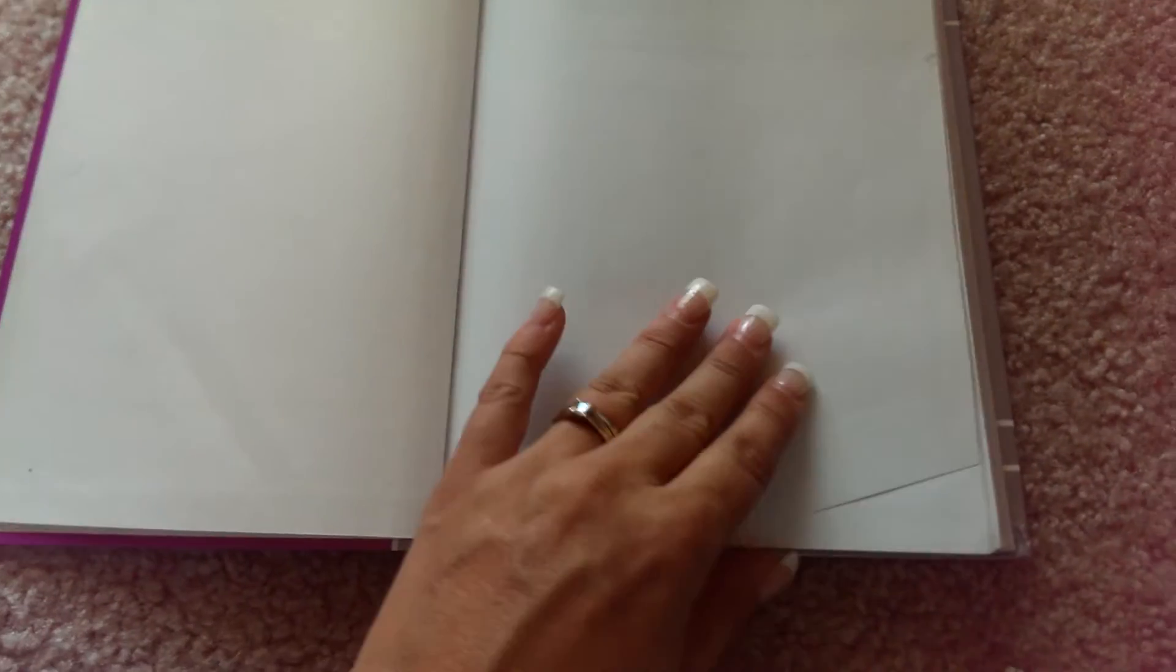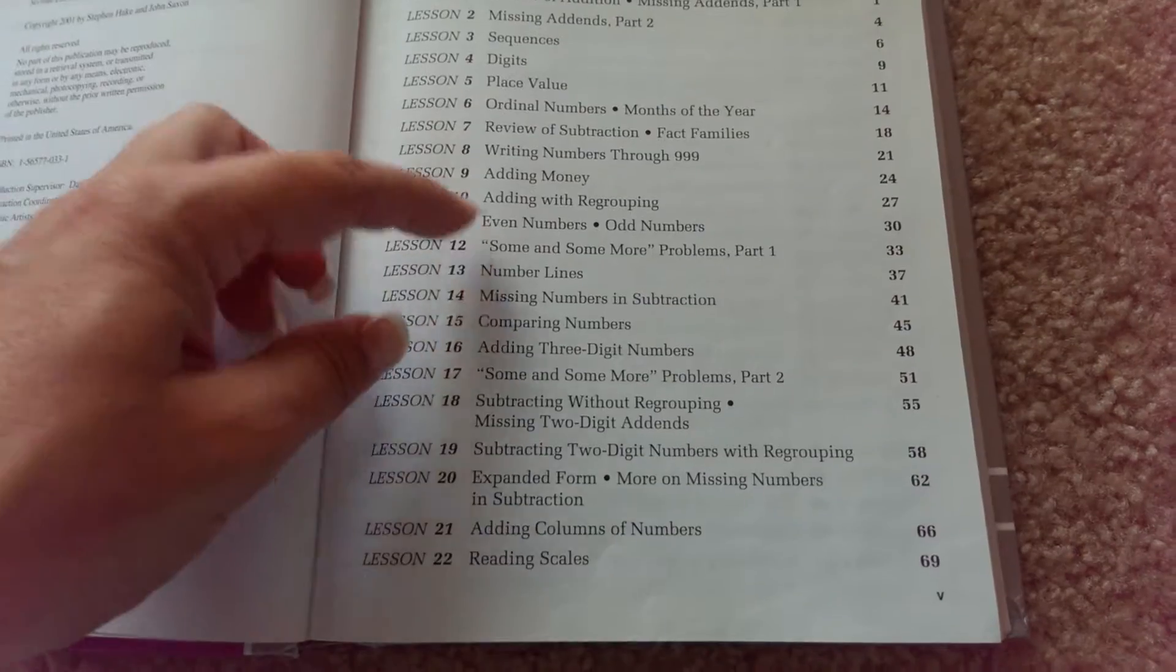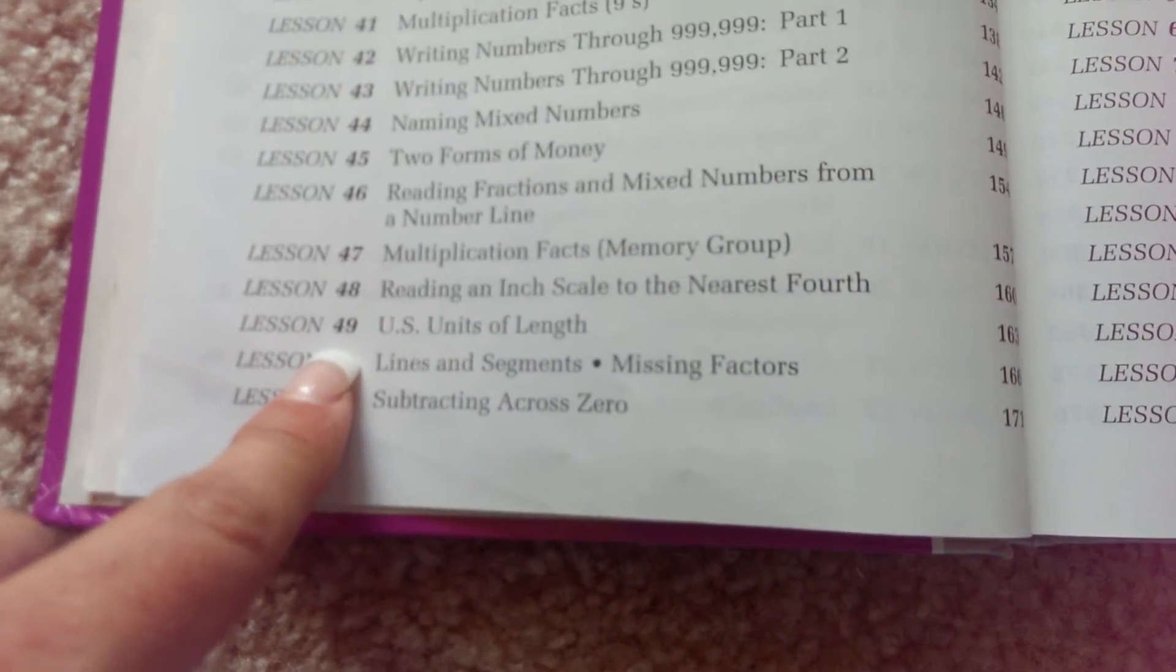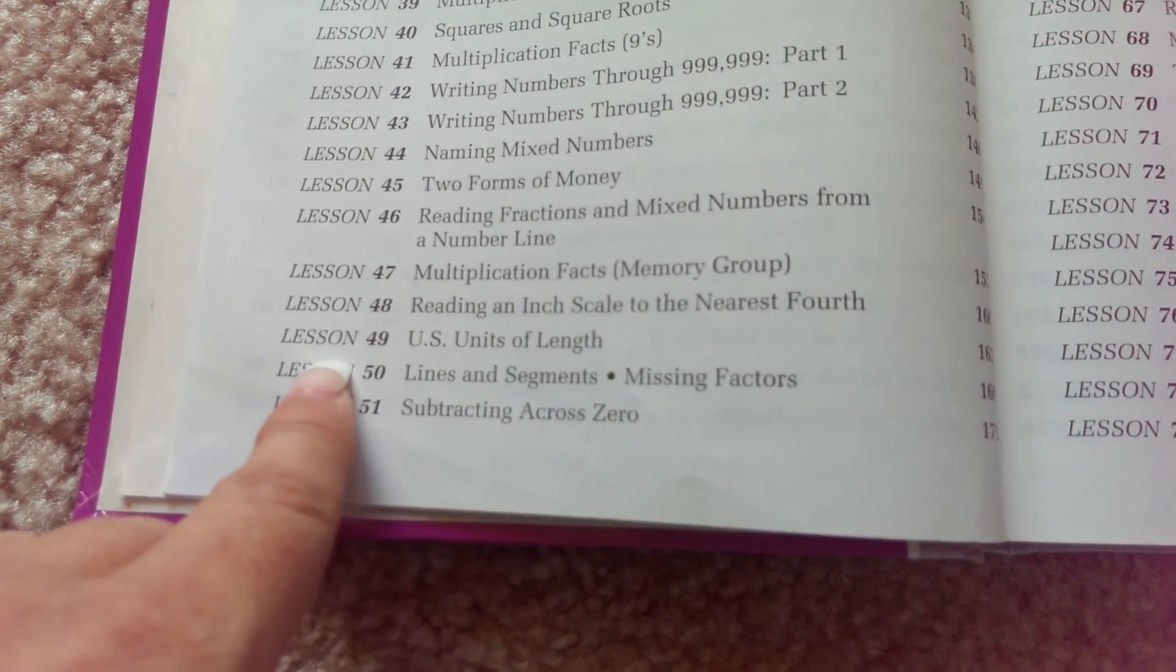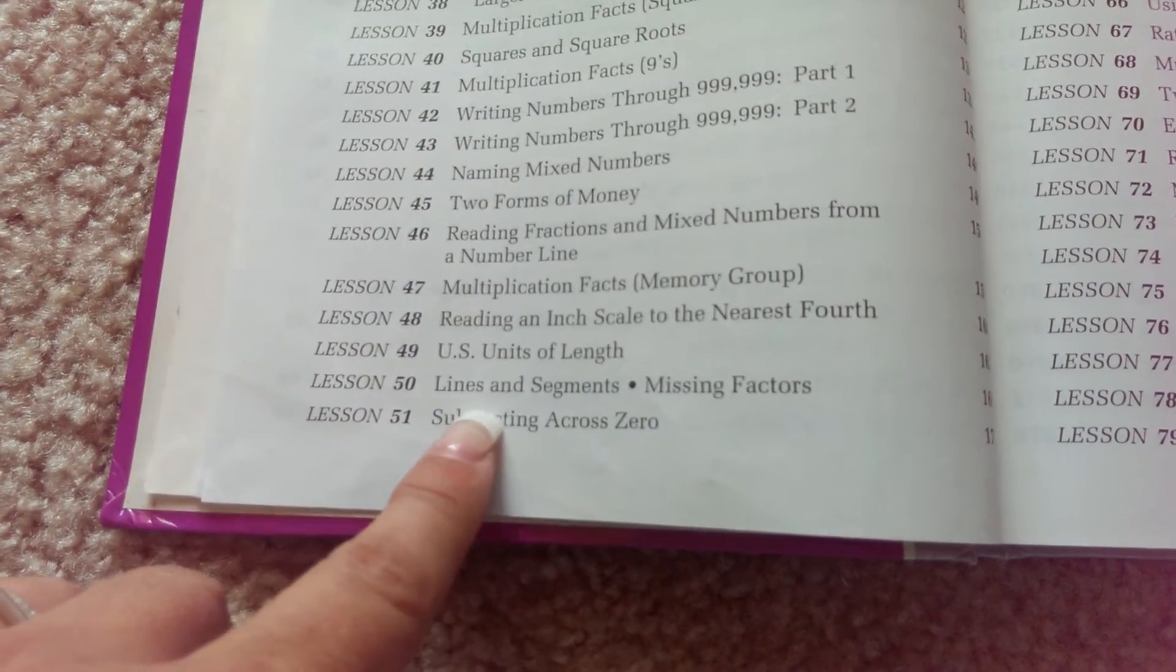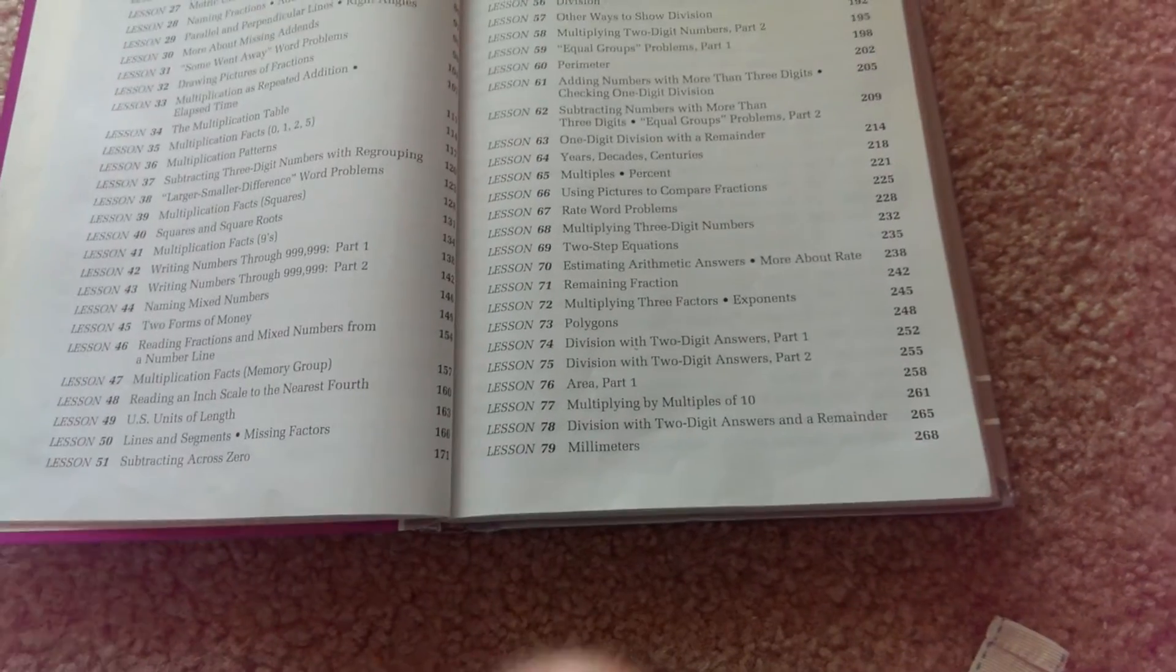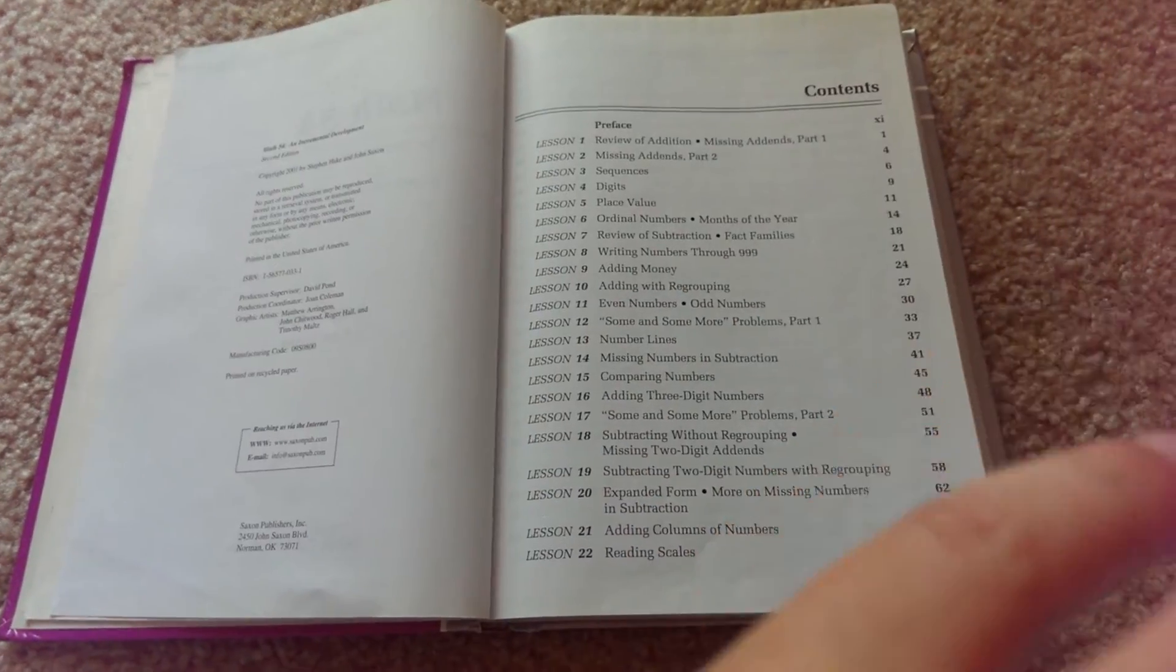I did notice that lesson 49 in Beth's first edition is just lines and segments. But in the second edition, lesson 49 is U.S. units of length, and lesson 50 is lines and segments with missing factors. So I'm not sure, should I still go for the first edition, or would this second edition be okay? Any input would be awesome.